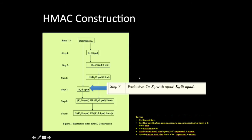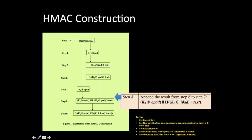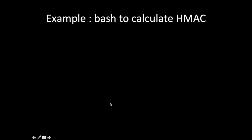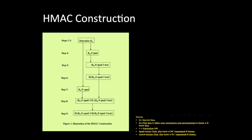Once we have the result from step five, in step seven we take K0 and exclusive-OR it with opad. Then in step eight, we append the result from step six to the result from step seven. This combined result from step eight is then processed to produce the final HMAC. This is how the HMAC is calculated.